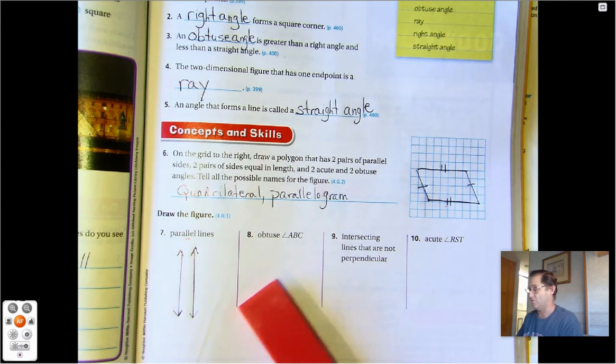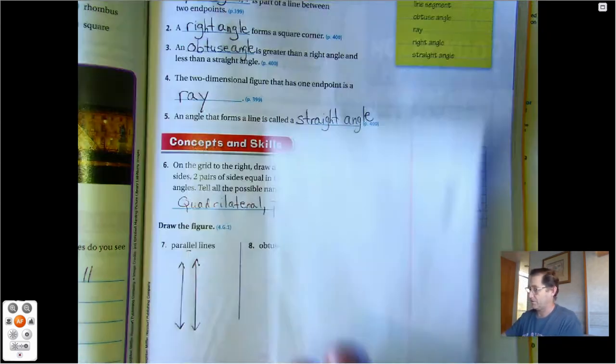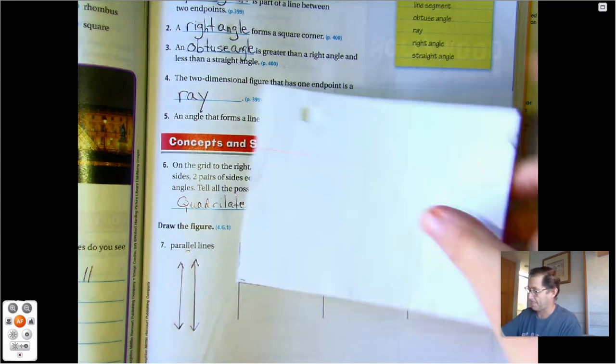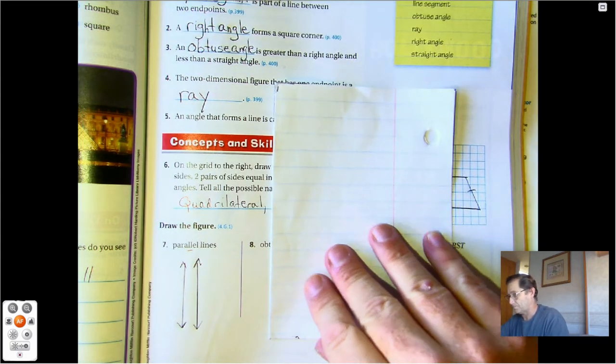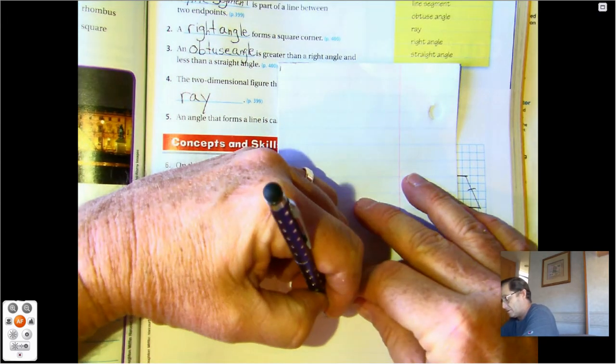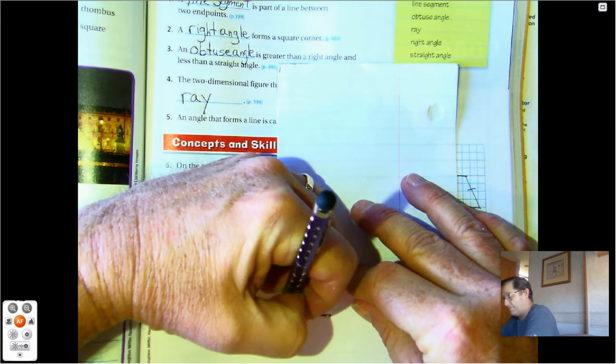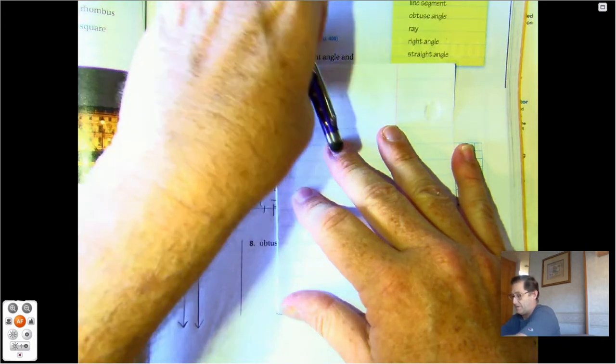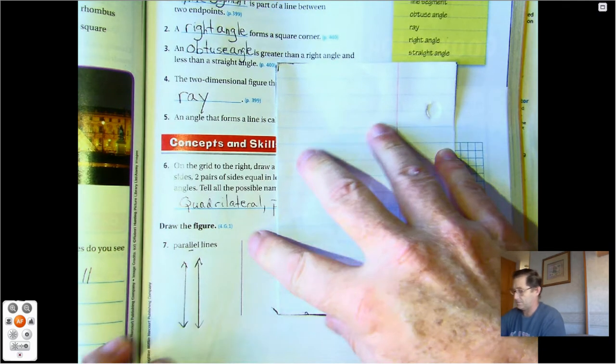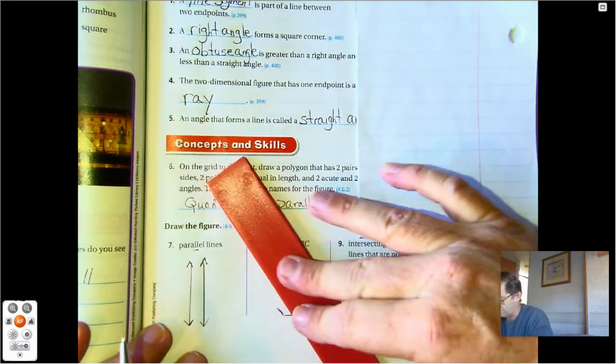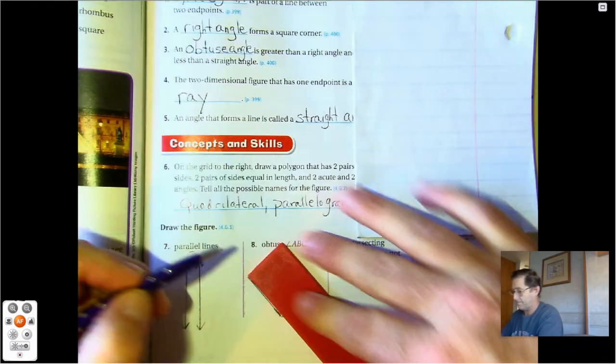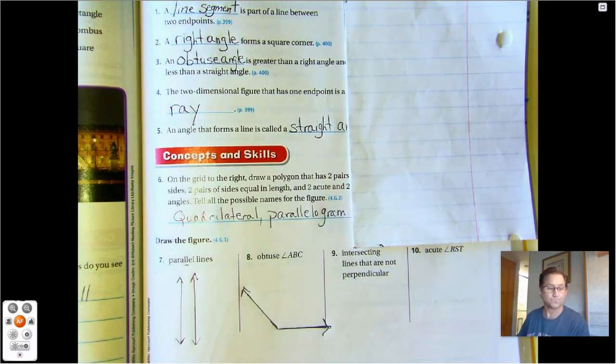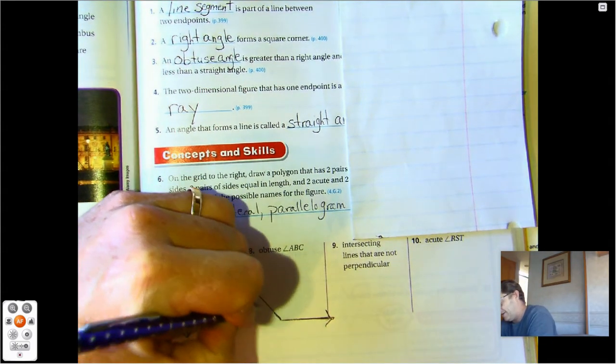An obtuse angle. Remember that an obtuse angle is greater than a right angle but less than a straight angle. So if we start here and line up, a right angle would be straight up the paper, so we know it's got to be off the paper slightly. So I have to open wider than a right angle. And it says ABC, so we need to label it A, B, and C.